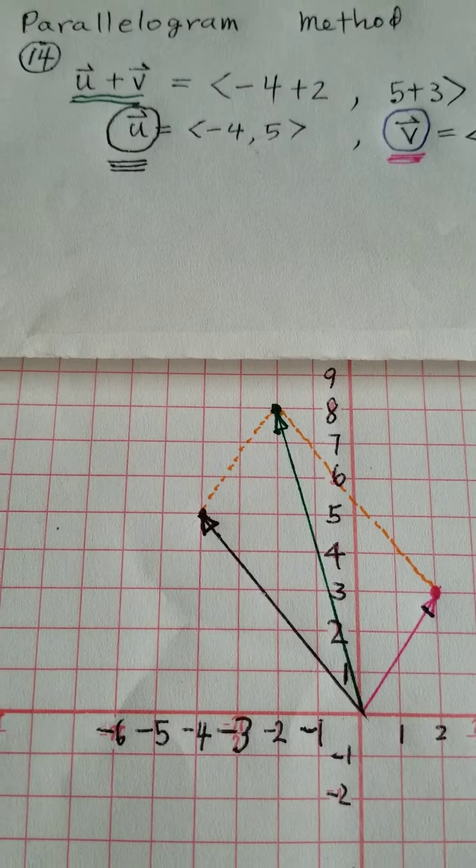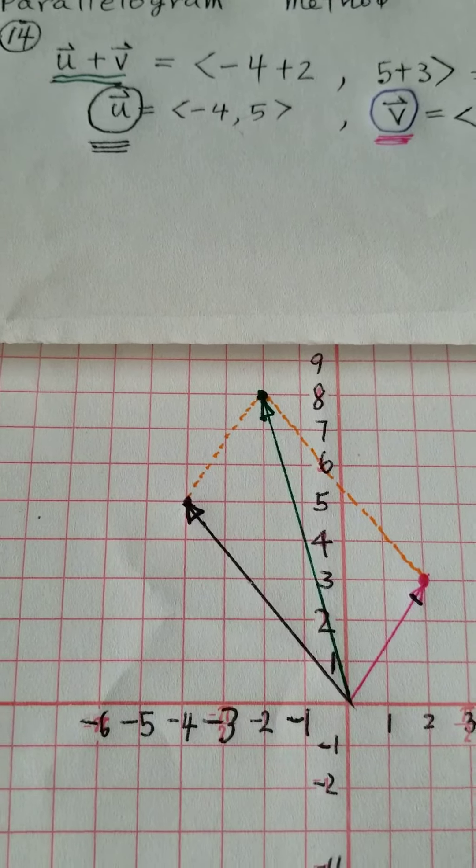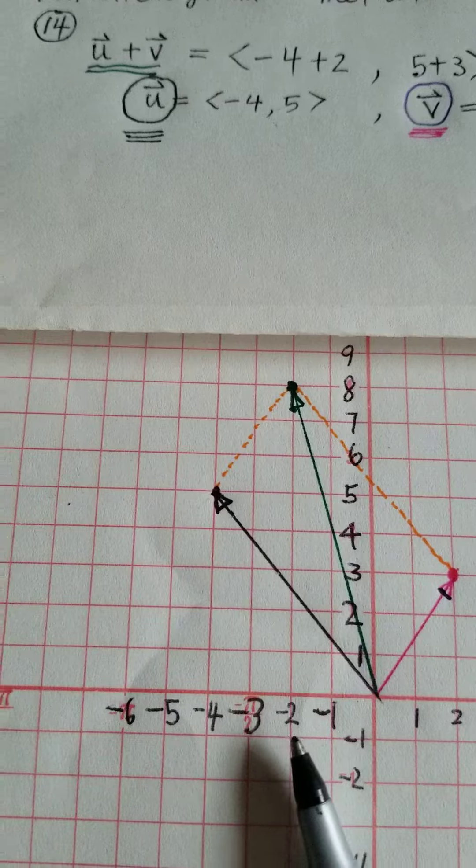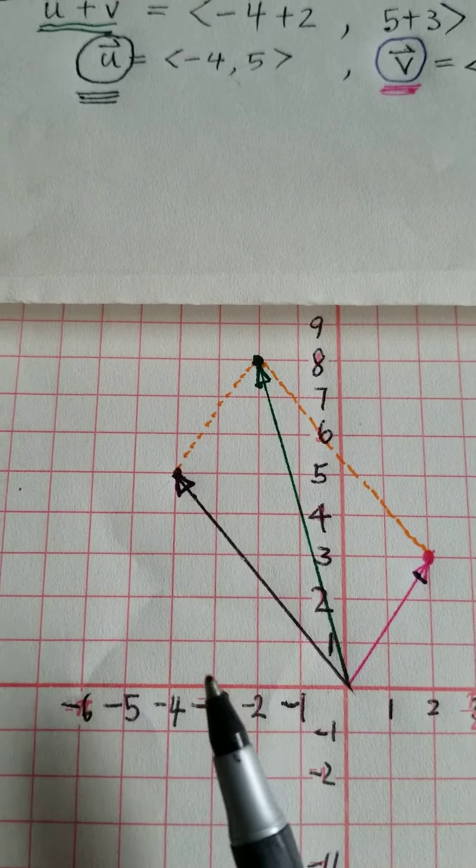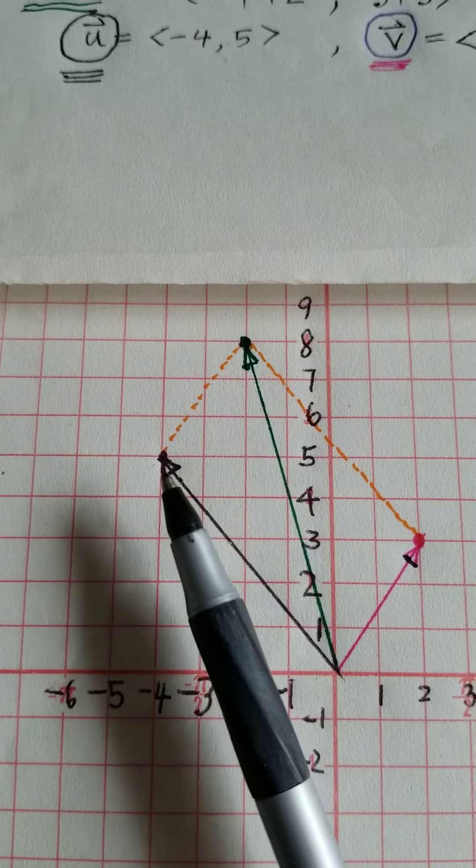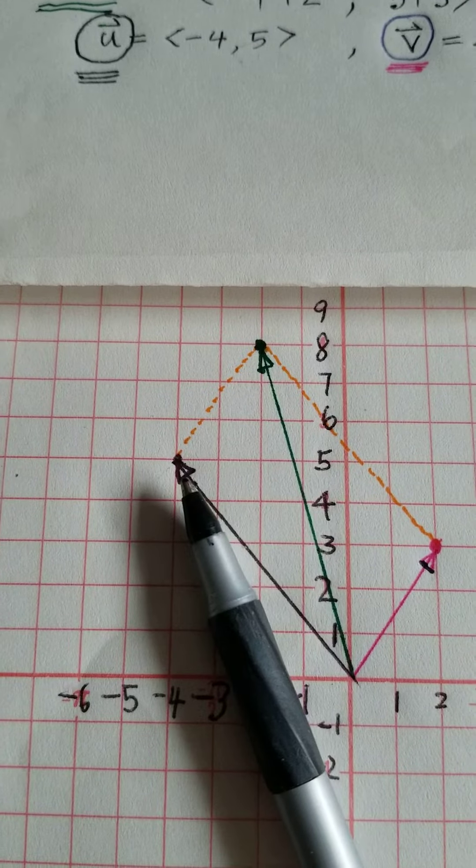u is negative 4 and 5, right. So we go here 1, 2, 3, 4 negative and go up 5. Okay, so the black line is the u.